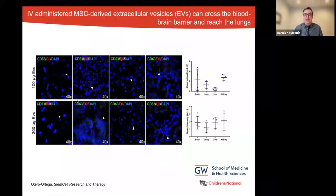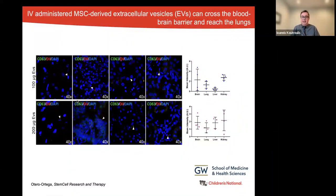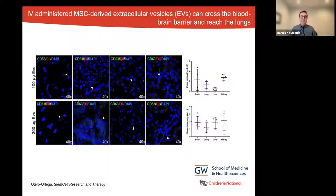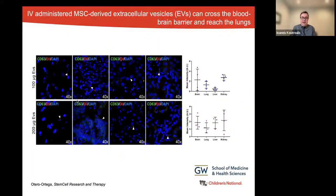Several studies have indicated that EVs can reach organs. This graph shows that when two different doses of MSC-derived EVs were administered IV to mice, they were able to cross the blood-brain barrier. The measured concentration of EVs in the target organs is proportional to the initial dose administered IV, demonstrating that the EVs are reaching the organs we're trying to study and do have effects on those organs.